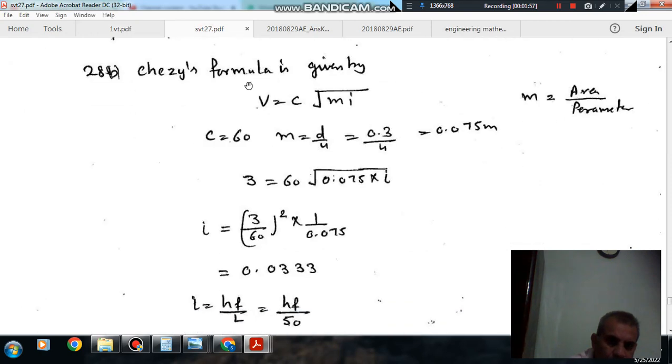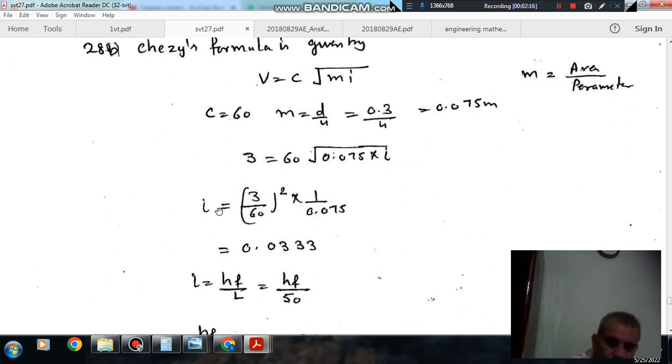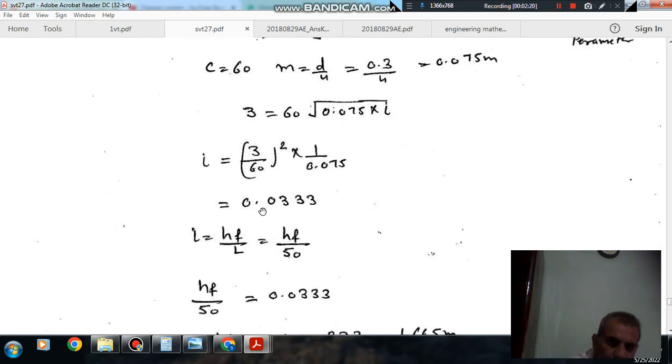So here using Chezy's formula V is equal to C √(m i). m is your area by perimeter so that is D by 4. So D is your 0.3 by 4, that is 0.075 and Chezy's constant is given as 60. So from this we can find out i. So i is 0.033.